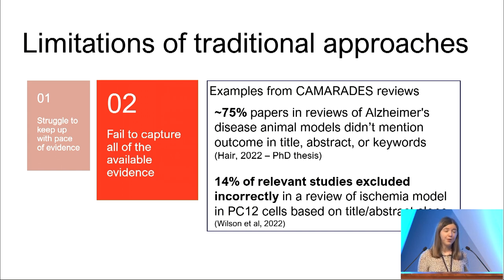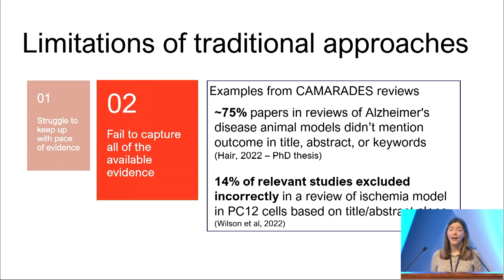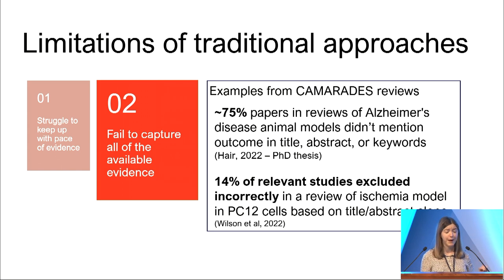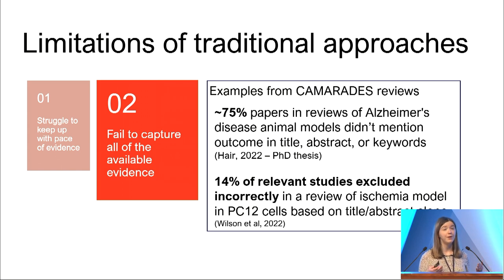What happens is when authors write up these papers, not all of that information is going to be present in the title, abstract, or even the keywords. We've found that by relying on databases like PubMed and Web of Science, we're actually missing huge chunks of the relevant literature because an outcome is buried somewhere in the full text. We've also shown that when screening titles and abstracts, we sometimes exclude significant proportions of relevant studies because it's not clear from the title and abstract that the study would be relevant.